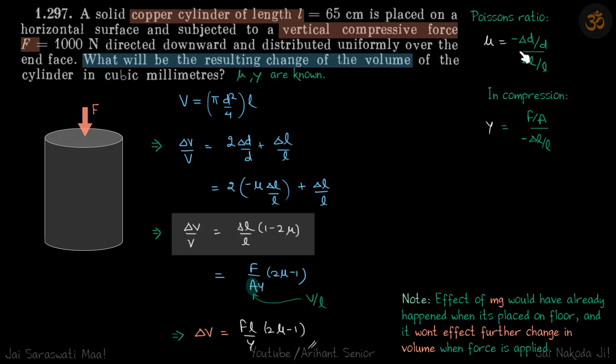Poisson's ratio is the lateral change divided by the lateral length divided by longitudinal length change divided by longitudinal length, δD/D upon δL/L. D in this case is the diameter. Let's write δD/D in terms of δL/L. So δD/D becomes minus μ δL/L.